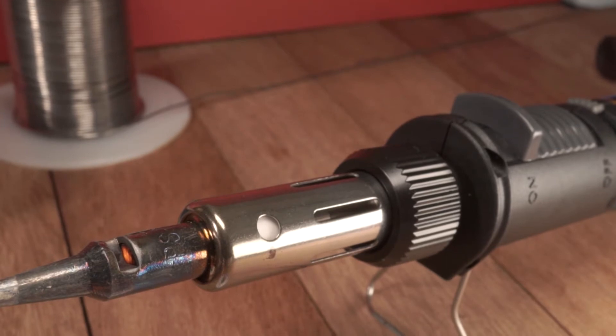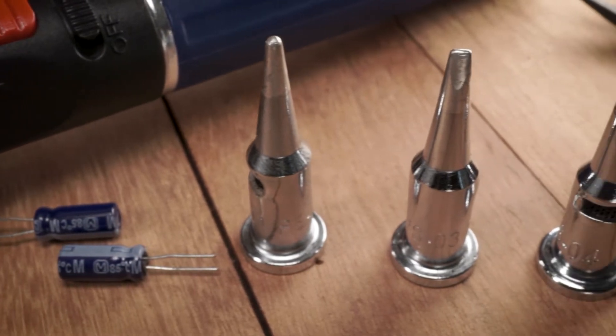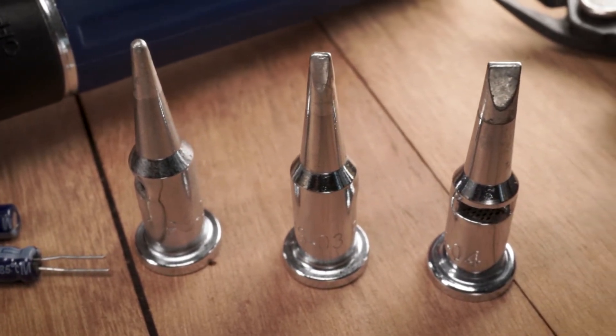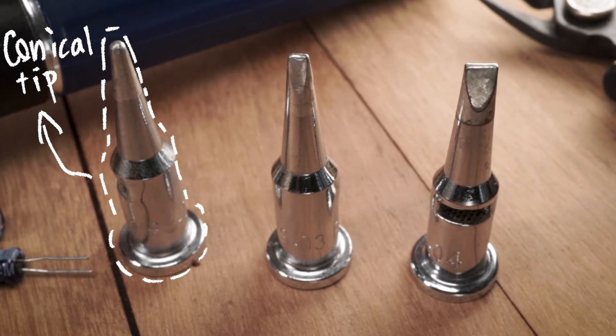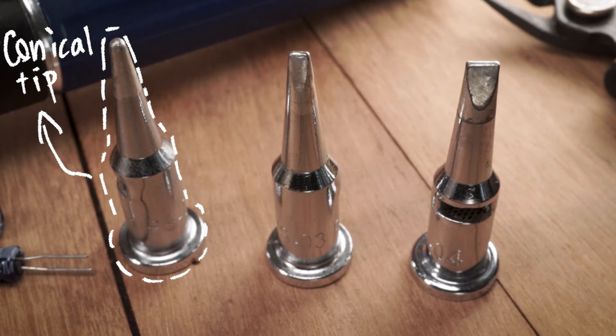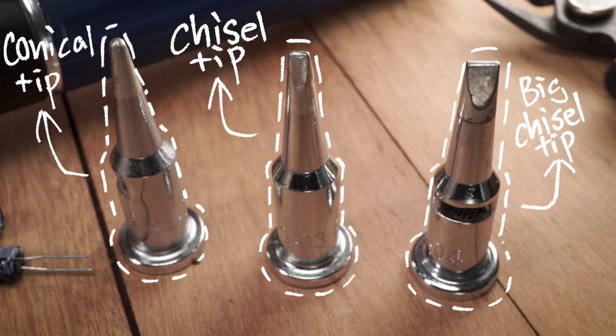So most soldering irons will have the ability to change the tips on them. And I just want to go over really quickly some really common ones. The first one is a conical tip and you would typically be using this for soldering components on a circuit board. And the other two most common are going to be chiseled tips. And you're going to use those for wiring. They're nice because they actually typically are a little bit bigger and they hold the solder a little bit better. You might want to use the larger tips if you're soldering really thick wire. The extra mass of that tip helps get the heat into that thicker wire.